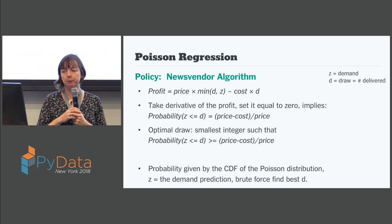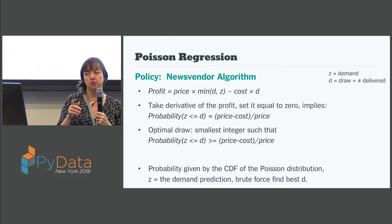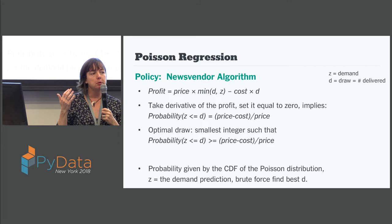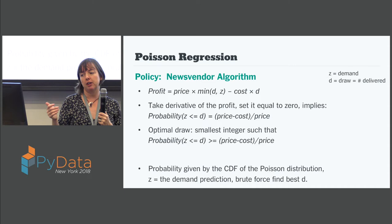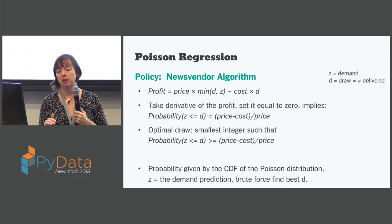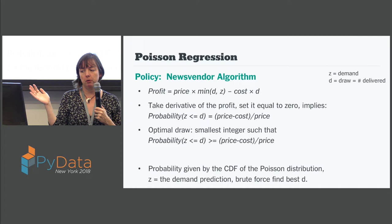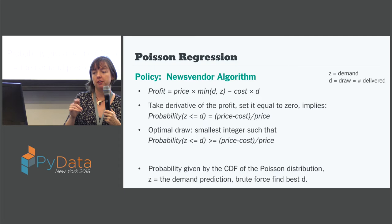If you want to optimize for profit, we define profit simply as the price of the newspaper times how many are sold, minus the cost for us to get the newspaper out there times how many we sent. If you take the derivative of this, set it to zero, it implies that the probability that the actual demand is less than or equal to what you send is equal to the price of the paper minus our costs, over the price of the paper. This means the optimal draw is the smallest integer such that that probability is greater than or equal to price minus cost over price. We know the price and cost structure of our business, and Z is the demand prediction from the previous step — so we just sweep through possible values of D and find the one that satisfies this constraint.